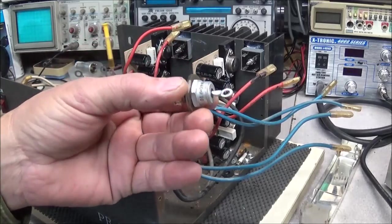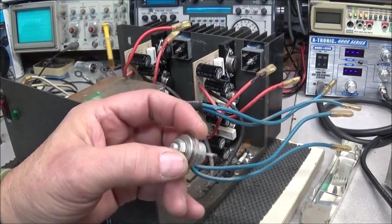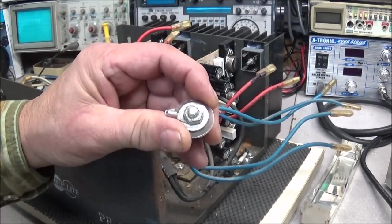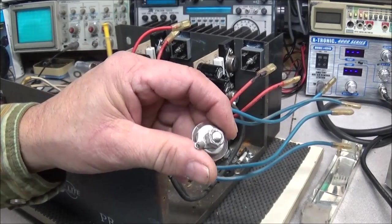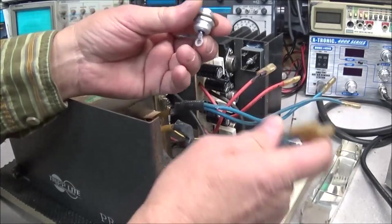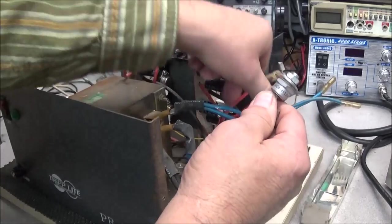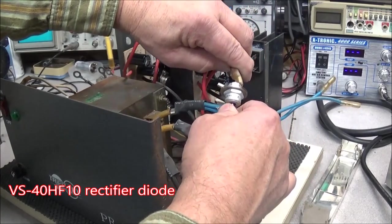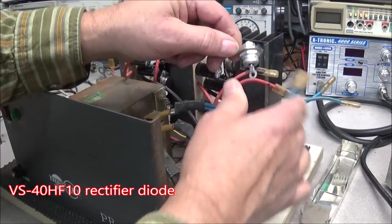So what I have here are some more stud mount diodes. These are 40 amp. And all I'm going to do is just connect here and connect here and you have your circuit - you have your rectifier.